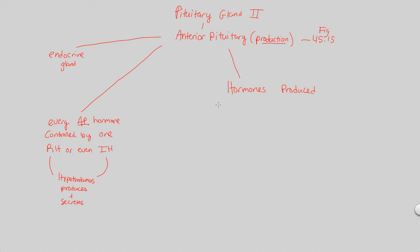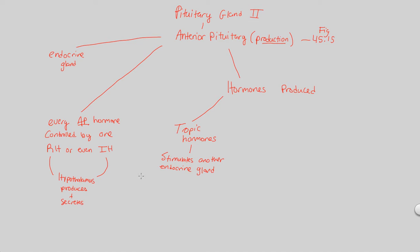The hormones produced in the anterior pituitary can be either tropic or non-tropic. Tropic hormones are any hormones that stimulate another endocrine gland. They are essentially part of a larger endocrine pathway, in which a message from the hypothalamus — a releasing or inhibiting message — goes to the anterior pituitary, which then makes a tropic hormone that sends another message to a different endocrine gland.